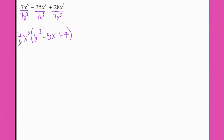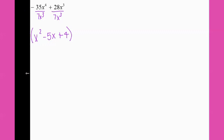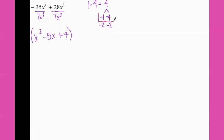Since I don't need the seven x cubed while I'm doing my grouping, I'm going to ignore that and focus on what's in the parentheses. My a is one and my c is four, so one times four equals four. The factors are either one and four, or two and two. Since it multiplies to a positive but adds to a negative, I know both terms are negative. Which pair adds up to negative five? That would be negative one and negative four.